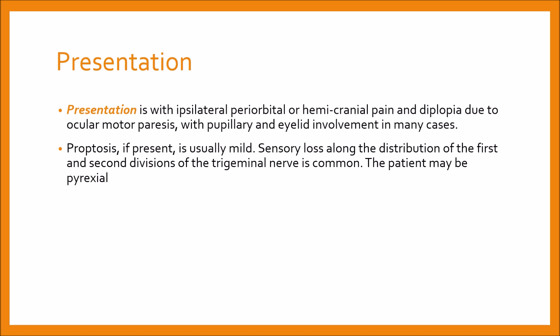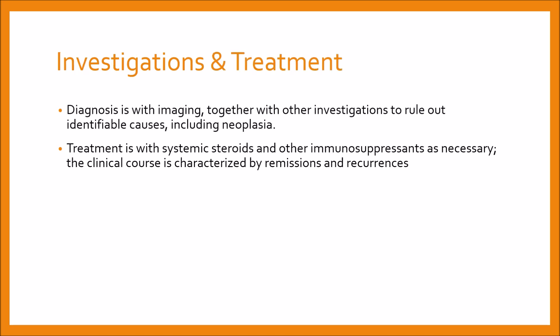Sensory loss along the distribution of the first and second divisions of the trigeminal nerve is common. The patient may be pyrexial. Diagnosis is with imaging together with investigations to rule out identifiable causes including neoplasia. Treatment is with systemic steroids and other immunosuppressants as necessary. The clinical course is characterized by remissions and recurrences.